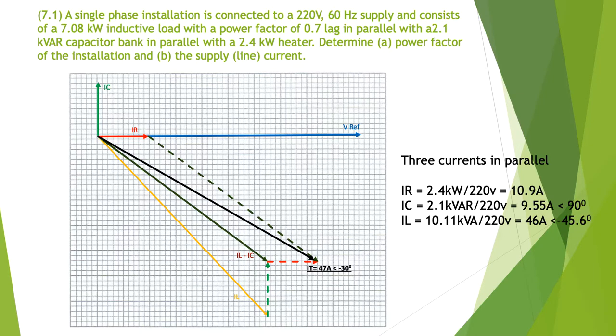From the origin, I have a total current of 47 amps, scaled off my drawing at minus 30 degrees. The length is 47 amps and the angle is minus 30 degrees with a magnitude of 47 amps.